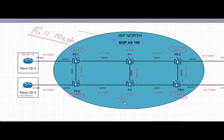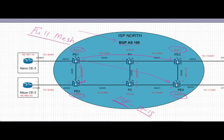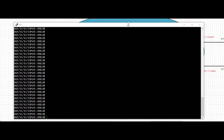In this topology, the IGP is already configured and we're using ISIS as our IGP, with all loopbacks reachable via ISIS. PE1 is going to have a BGP peering with PE2, PE3, and PE4. Similarly, PE2 is going to have peering with PE1, PE3, and PE4, and PE3 and PE4 are going to have peering back with the other BGP peers. Let's jump onto PE1 and start the config.